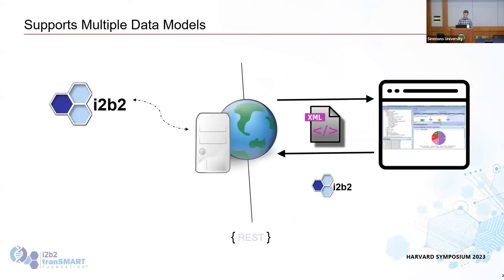There are a lot of other people and I have an acknowledgement slide at the end. i2b2 — you might not think of it this way — but i2b2 really can support different data models. What is i2b2? i2b2 is three things: it's a client or set of clients (the web client being the most popular one), it's a server which runs on WildFly that defines an XML interface that can accept REST calls to query data.